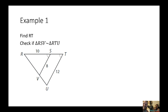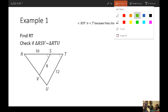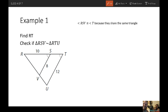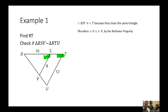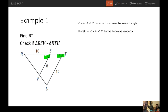Alright, so example one, we're going to check if triangle RSV is similar to RTU, triangle RTU. So we're going to go ahead and say that angle RSV, and that would be this angle right here, RSV is congruent to angle T because they share the same triangle, the bigger triangle. Therefore, angle R is congruent to angle R by the reflexive property. And simplest of terms, angle R is being shared by both the smaller triangle and the bigger triangle. And that's the reflexive property.